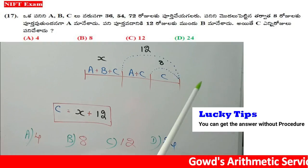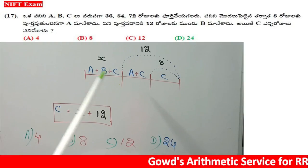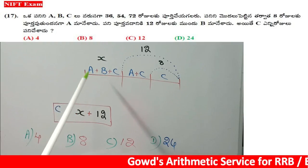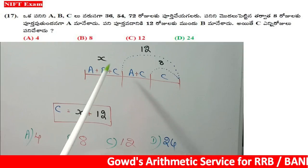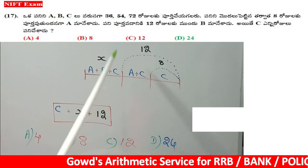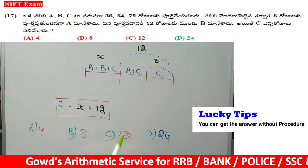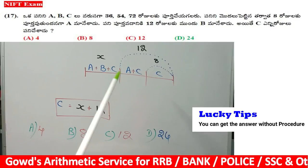First, start your work on this question. There are three people in the question — A, B, C — who started. How many days did they work? We don't know.